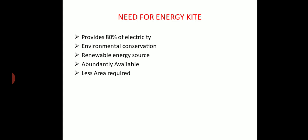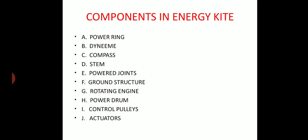Components in kite energy kites include: power wings, dynamic compass, steam power joints, ground structure, rotating engine, power drum, control pulleys, and actuators.